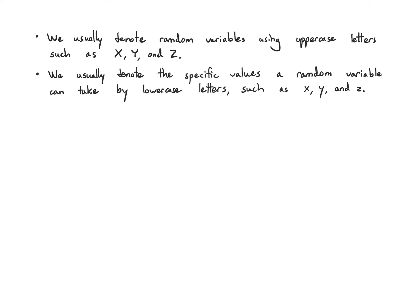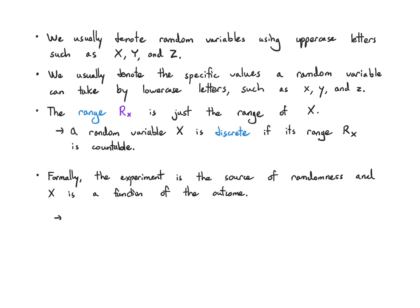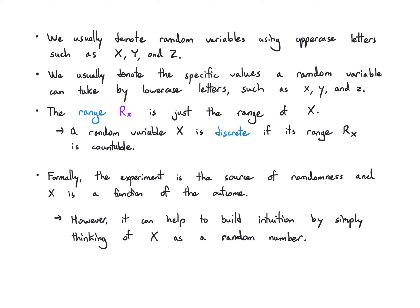So if you're thinking about the actual random variable, you write capital X. And if I'm referring to a value it could take, I might say little x equals one is one of those values. The range R_X is just the values the random variable can take. We say the random variable is discrete if the range is countable — meaning it's finite, or you could index it from one to infinity. Formally, the experiment is the source of randomness and X is a function of the outcome, but it's fine to just think of X as the source of randomness.